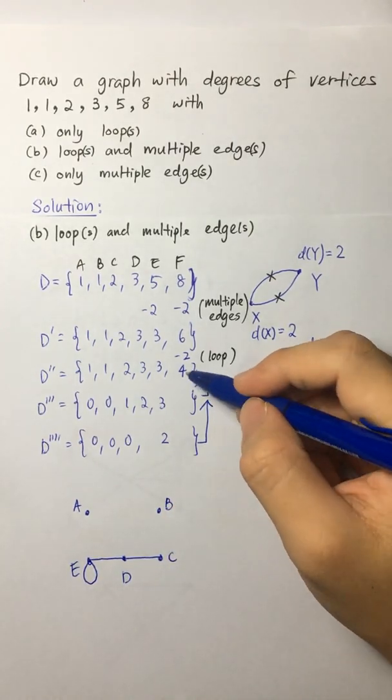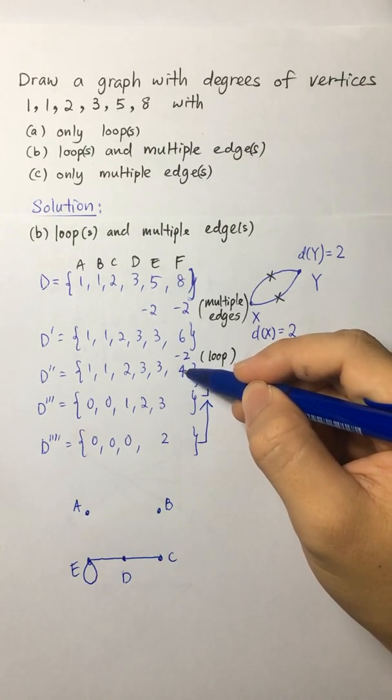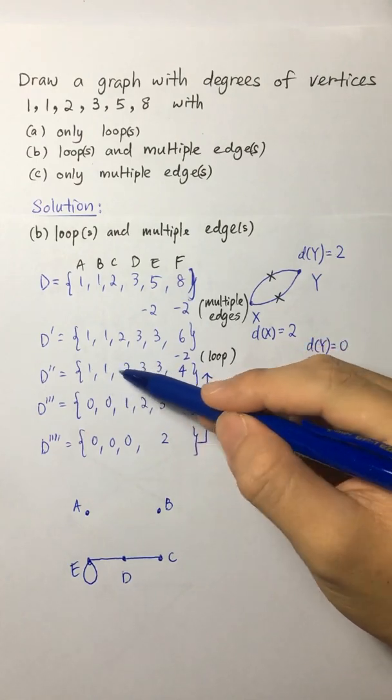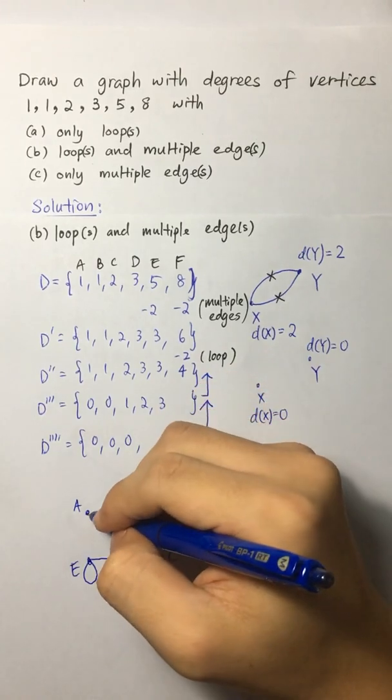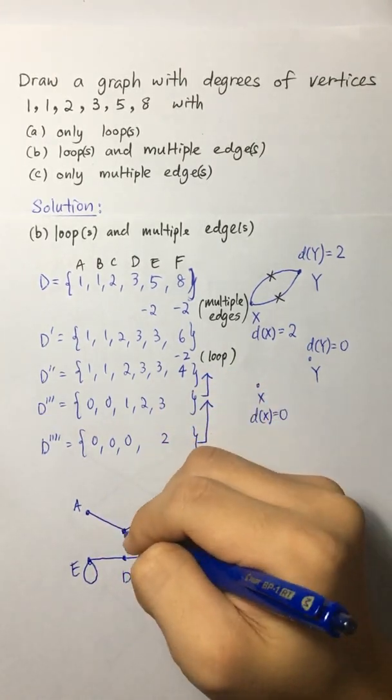And then we reverse the process again by adding the vertex F. When we add the vertex F, we have to add back our corresponding edges to A, B, C, then D. So draw F here. And we connect to A, B, C, and D.